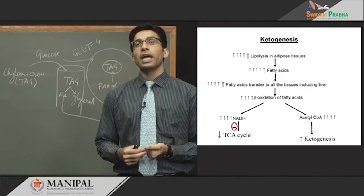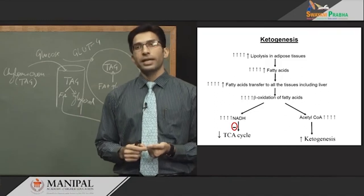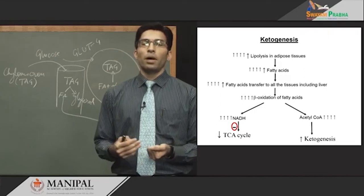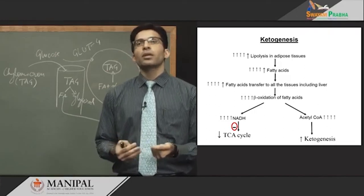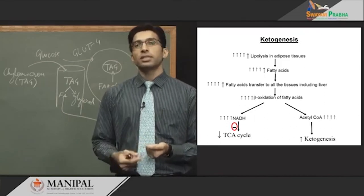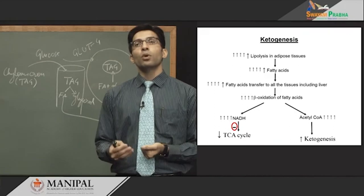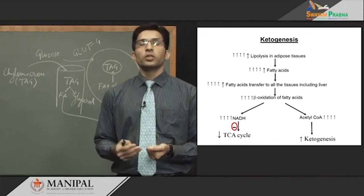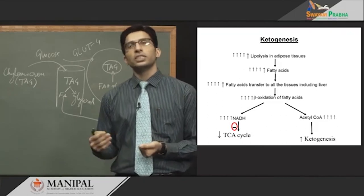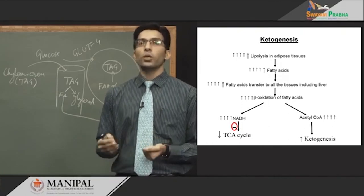The acute complication of type 1 diabetes is diabetic ketoacidosis. Increased ketone bodies in the blood are initially buffered by the body's buffer systems. But when so much ketone bodies are produced, the buffers cannot handle them. Ketone bodies such as acetoacetic acid and beta-hydroxybutyrate are acidic in nature, so they decrease blood pH and cause acidosis. Acidosis in the presence of ketone bodies is called diabetic ketoacidosis.